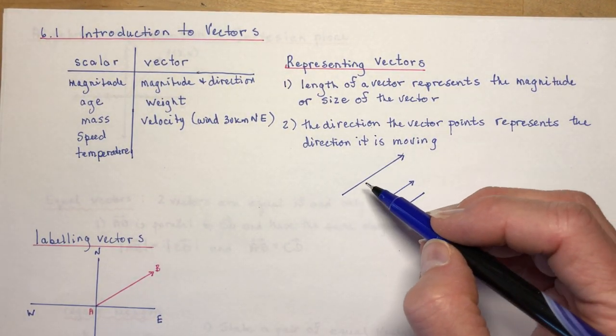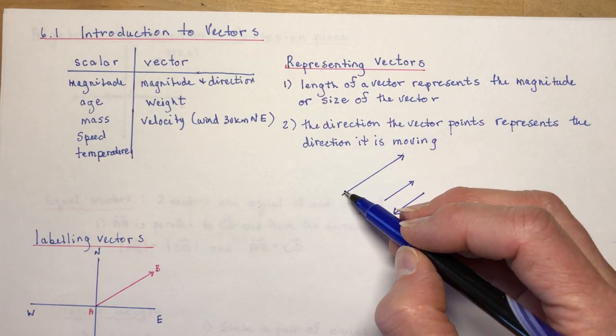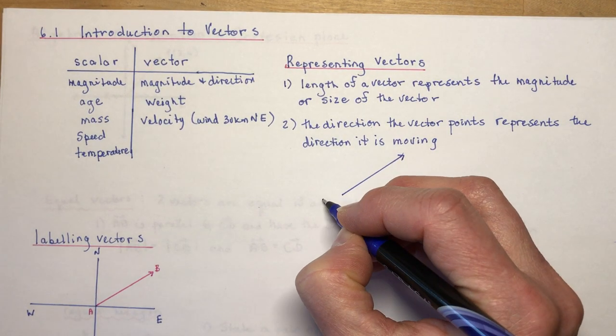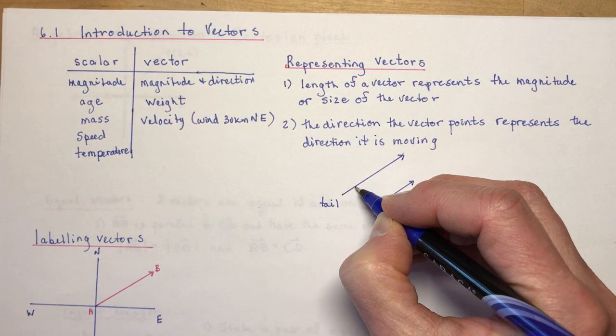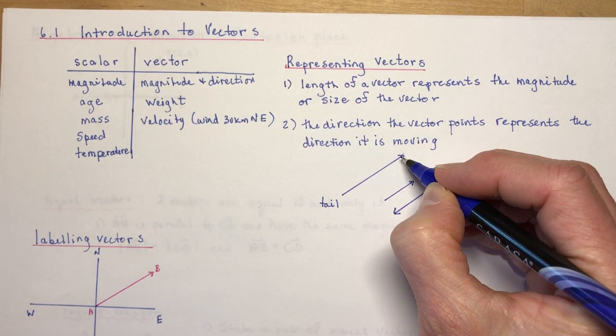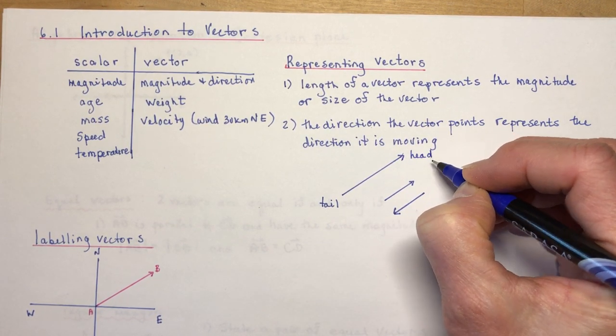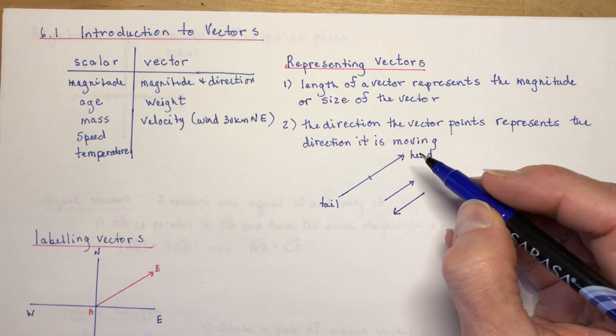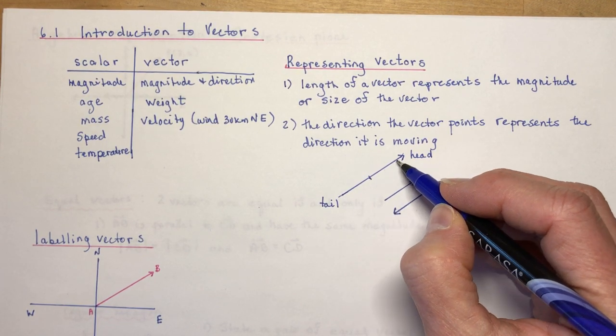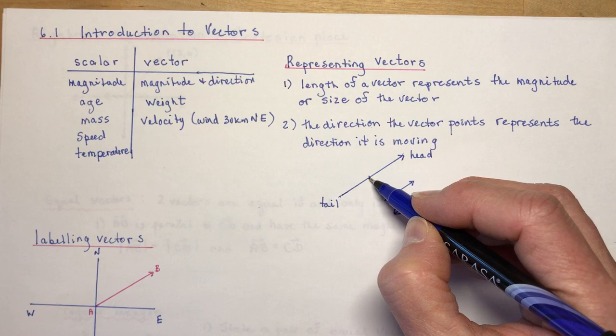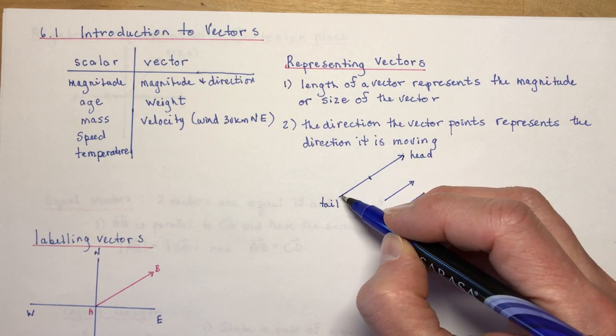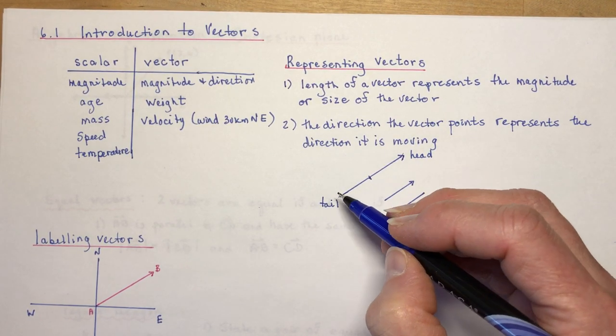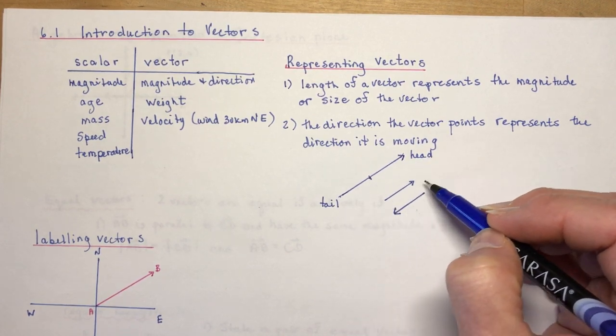So if I drew a vector like this I could say well this is my vector. This is the tail of your vector, because that's where it started from. And the arrow, where the arrow is, that is the head of your vector. So that gives it direction. And the magnitude of it would be, well depends on how far I want to make this scale. So let's say this was 100 kilometers and this is going to be 200 kilometers. And then I would need a direction for it.